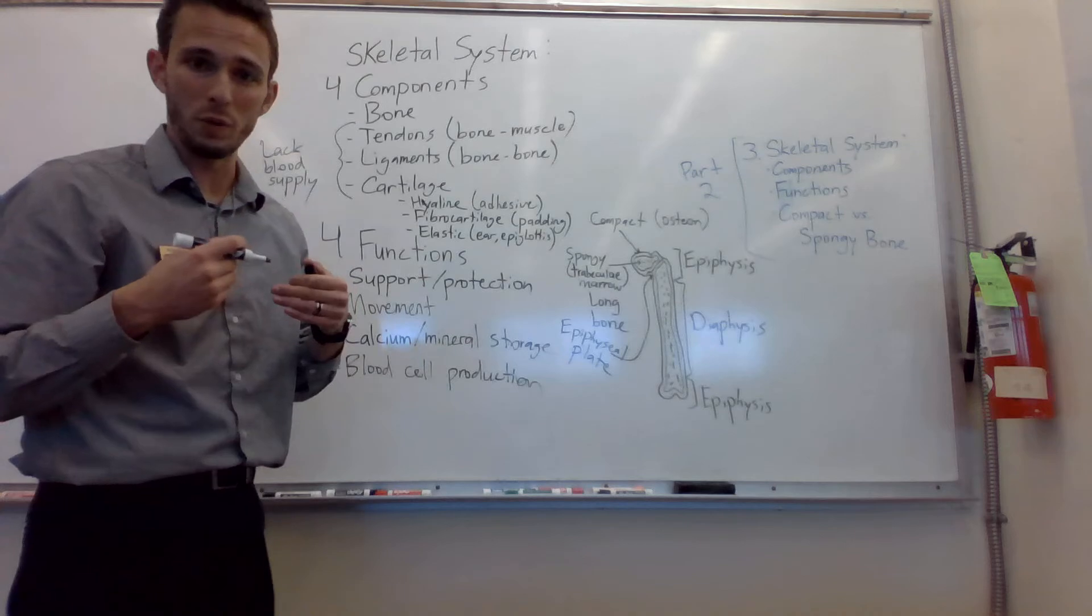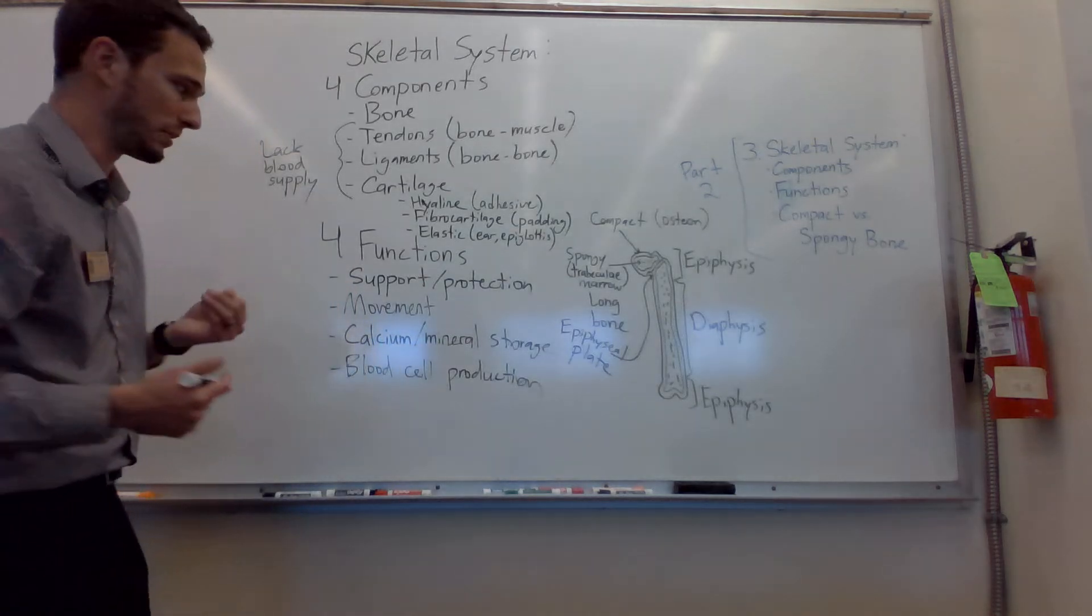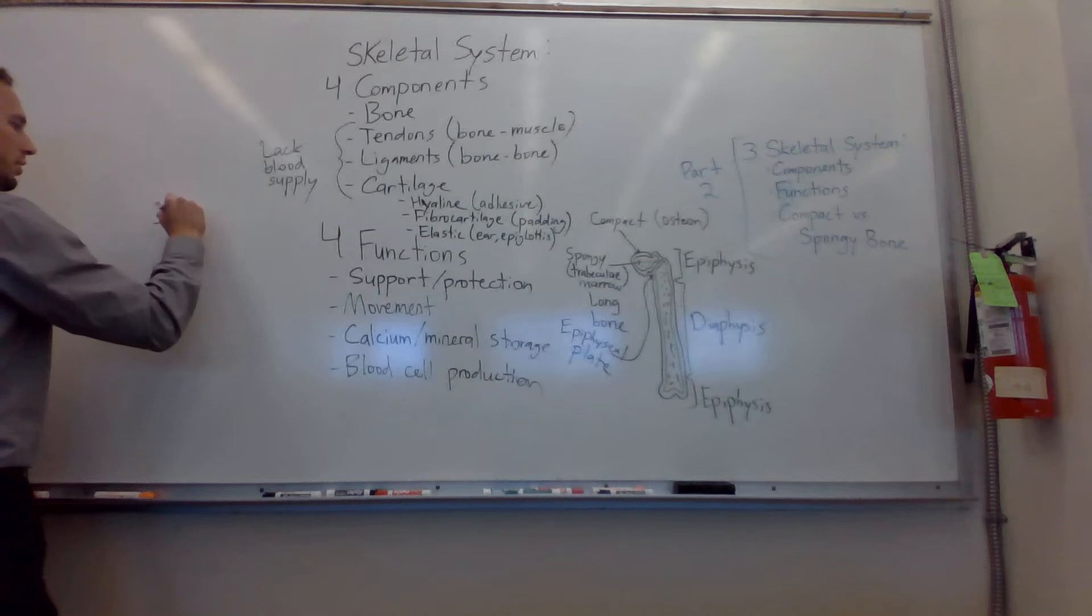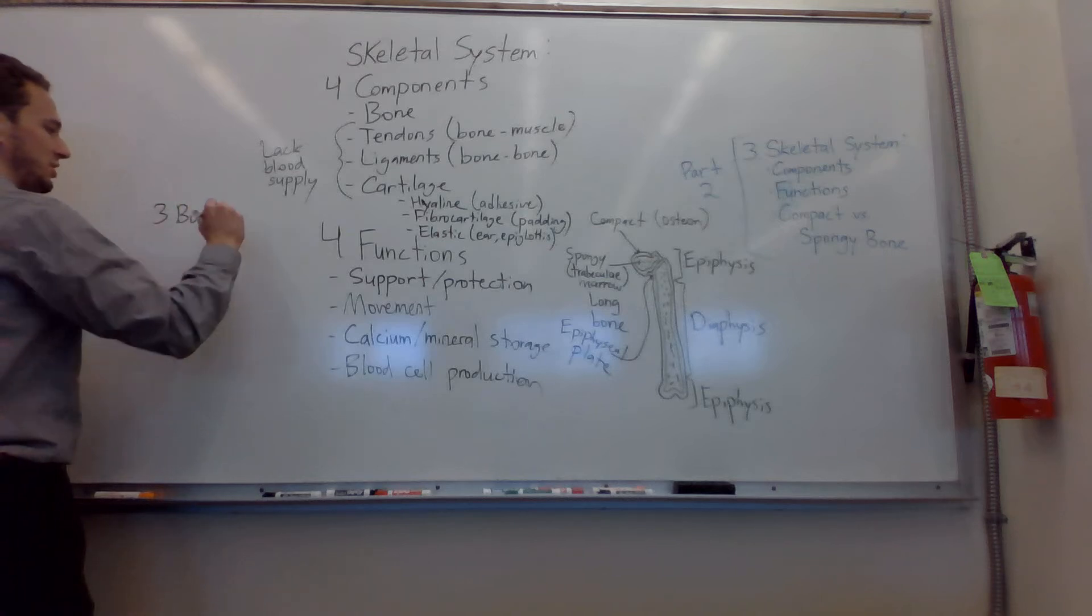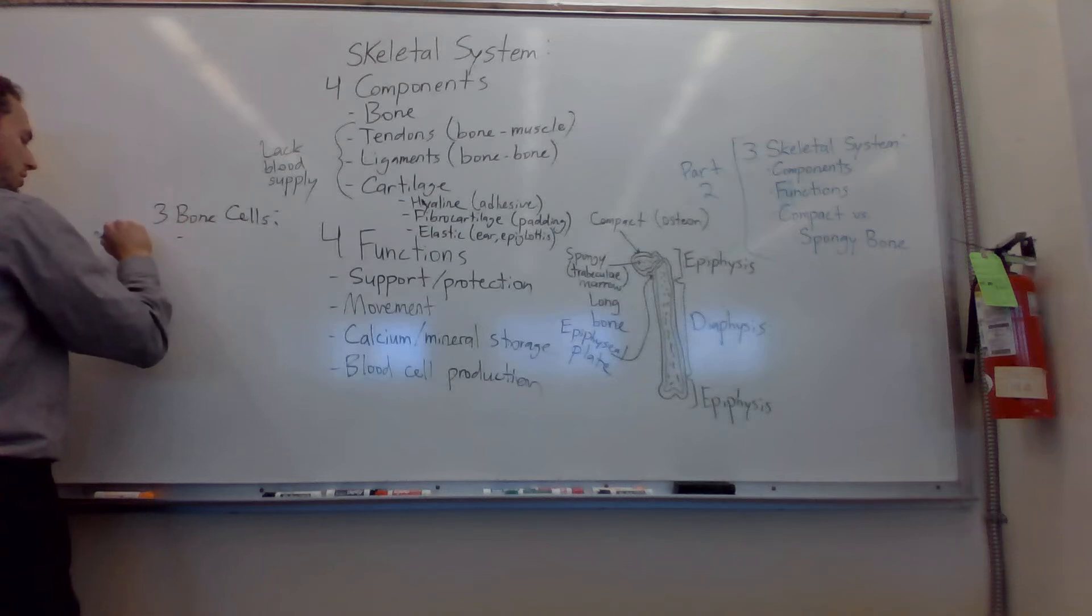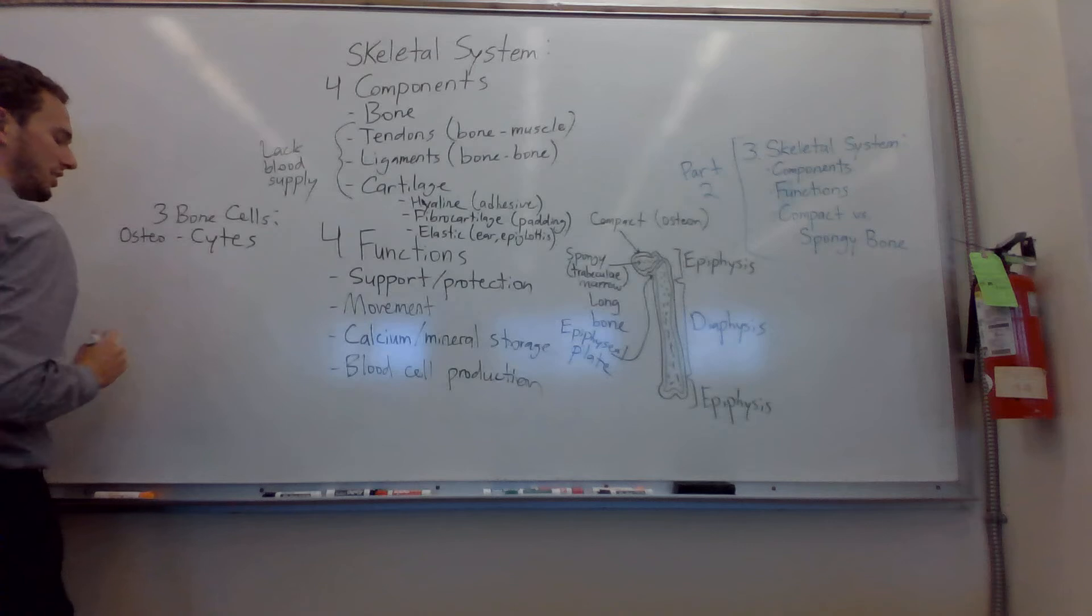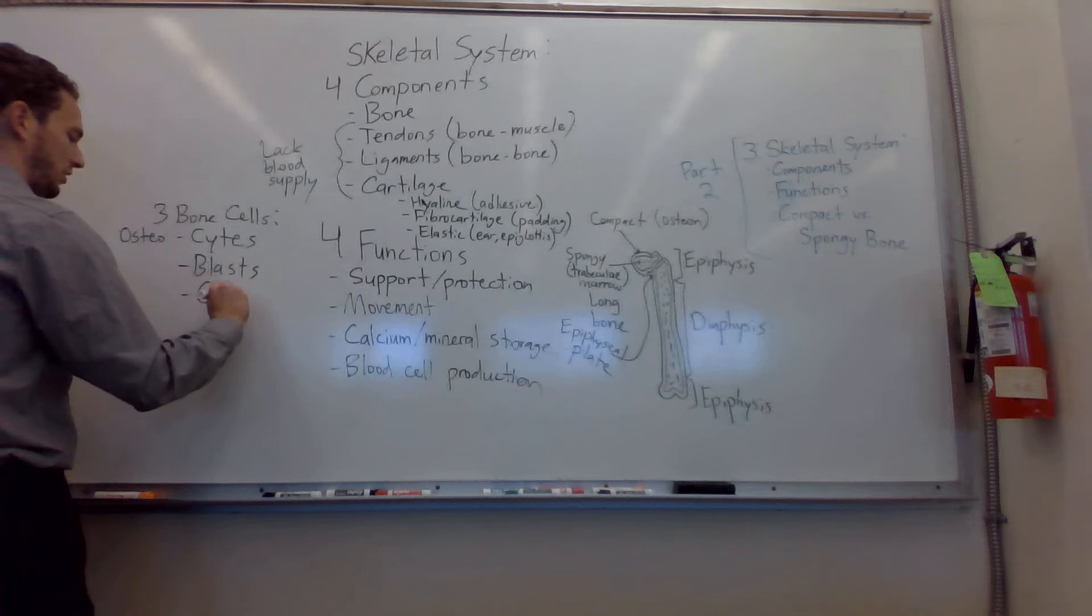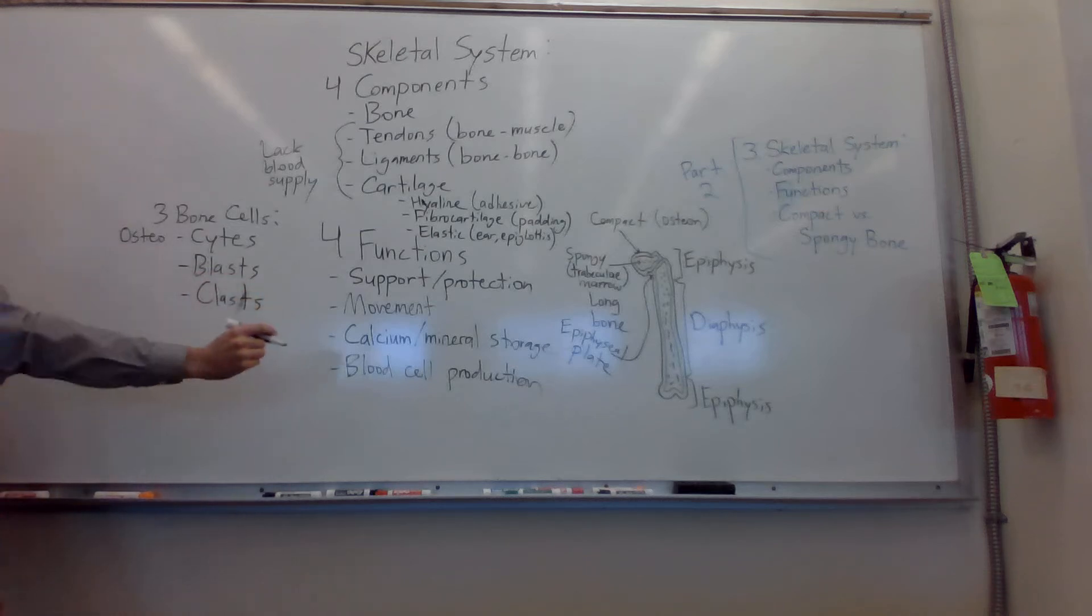So I talked briefly about how we actually build bone and there are going to be three bone cells. So three bone cells, all will start with osteo because osteo stands for bone. We'll have osteocytes which maintain the bone matrix. We will have osteoblasts that build the matrix. Then we'll have osteoclasts that break down the matrix. So blasts build, clasts crack.